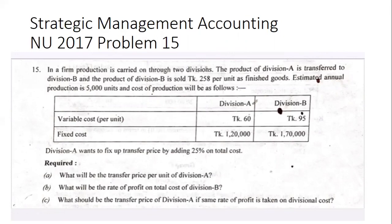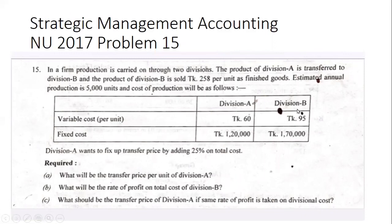Product A is transferred to Division B and the product of Division B is sold at 258 per unit as finished goods. Estimated annual production is 5,000 units. The variable cost per unit is given here. Division A wants to fix the transfer price by adding 25 percent on total cost.